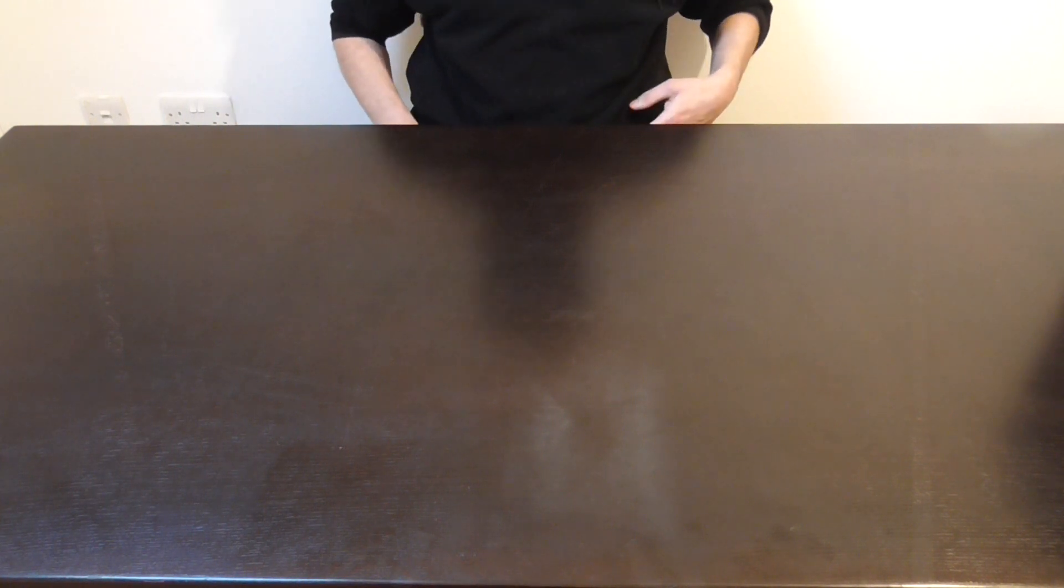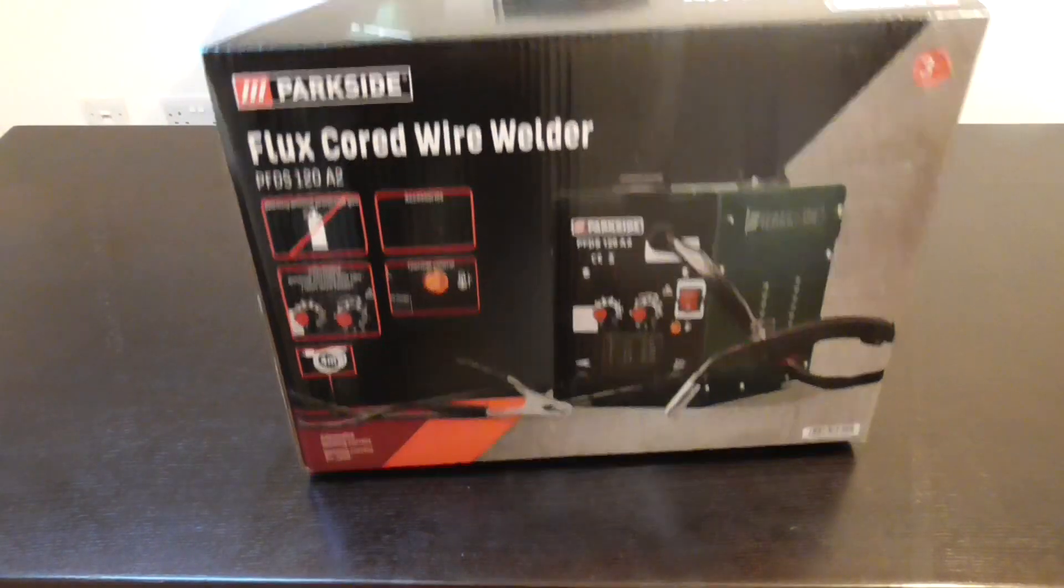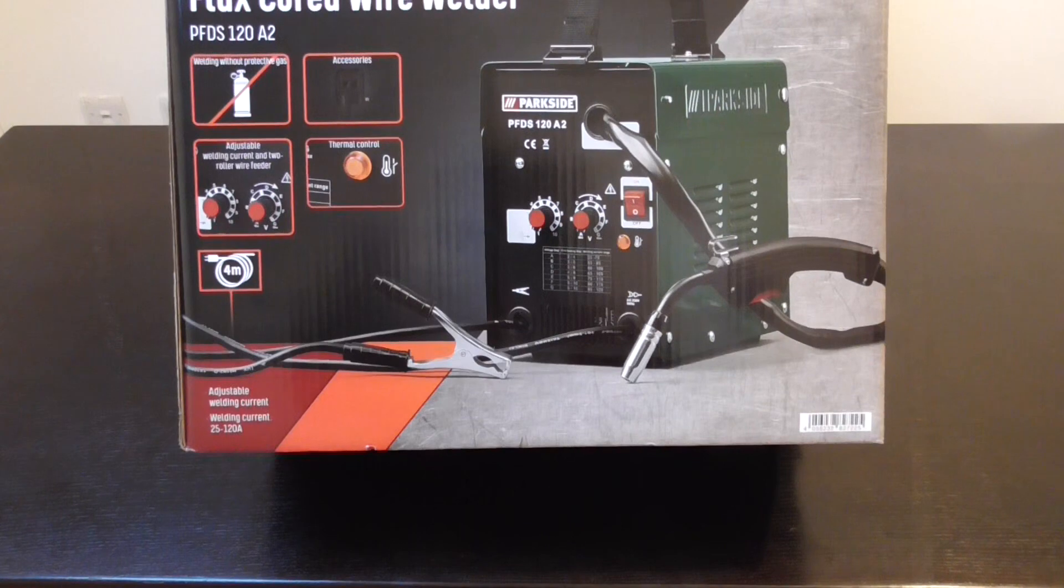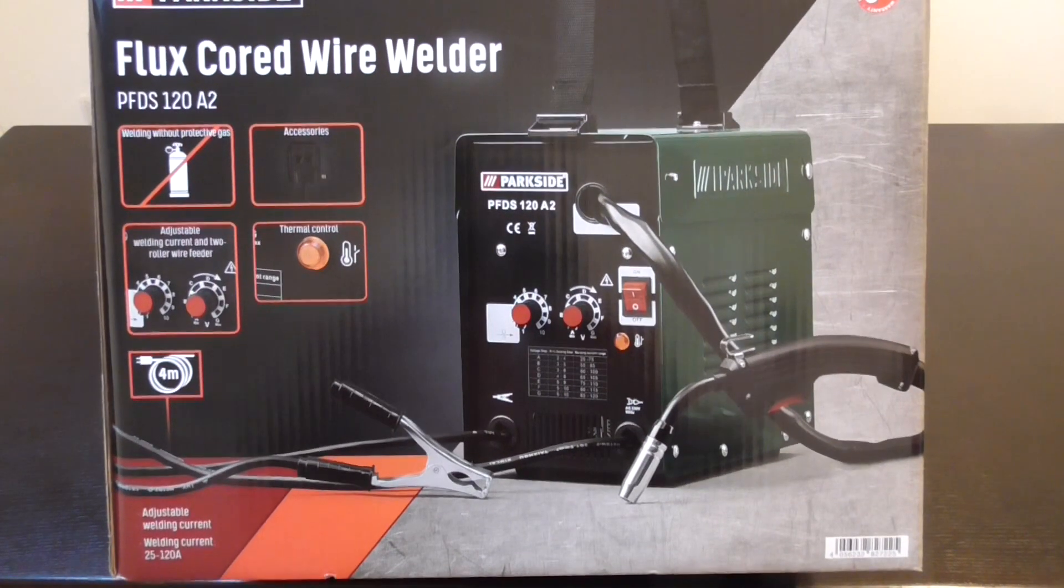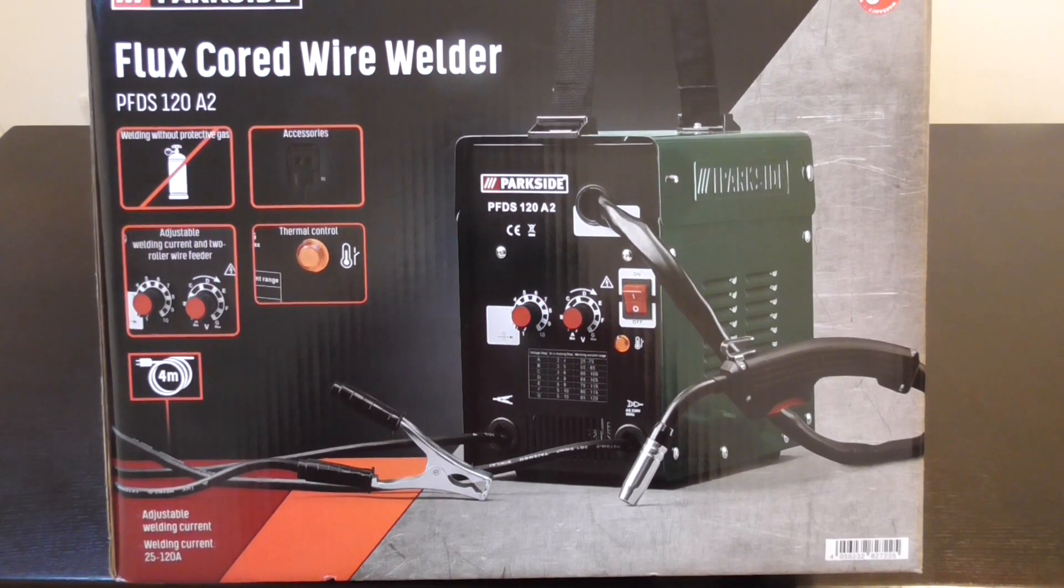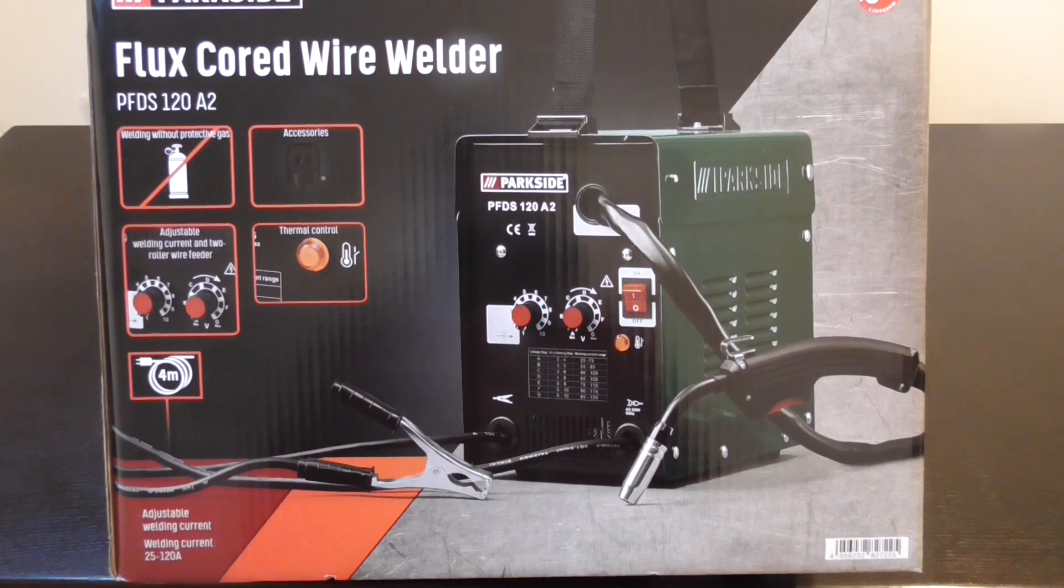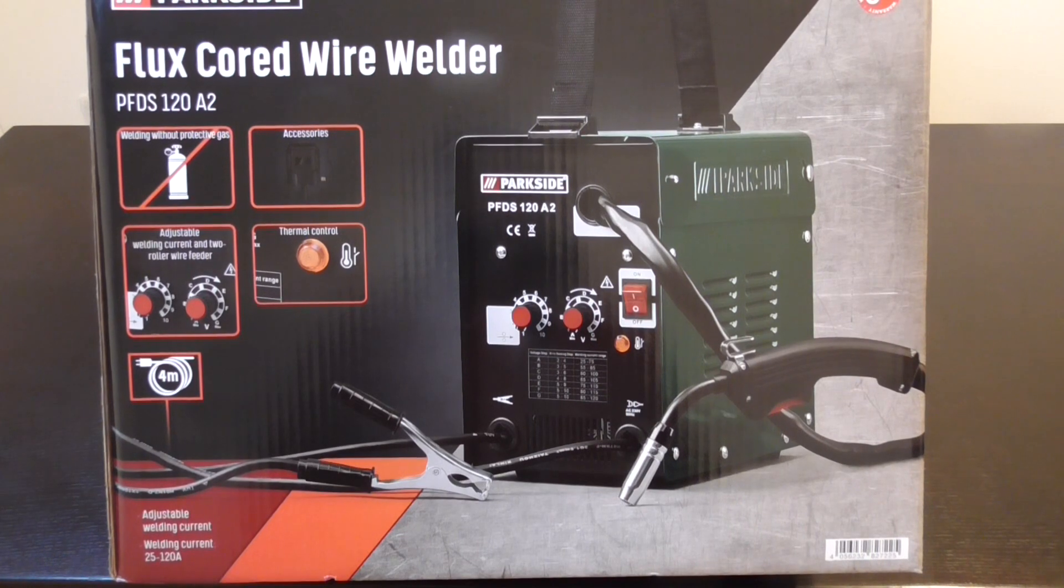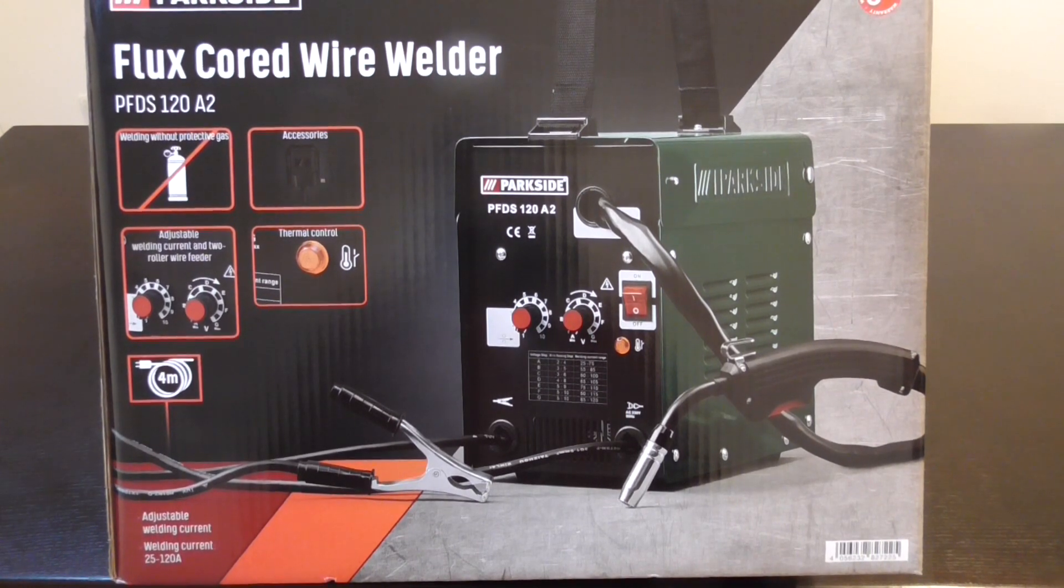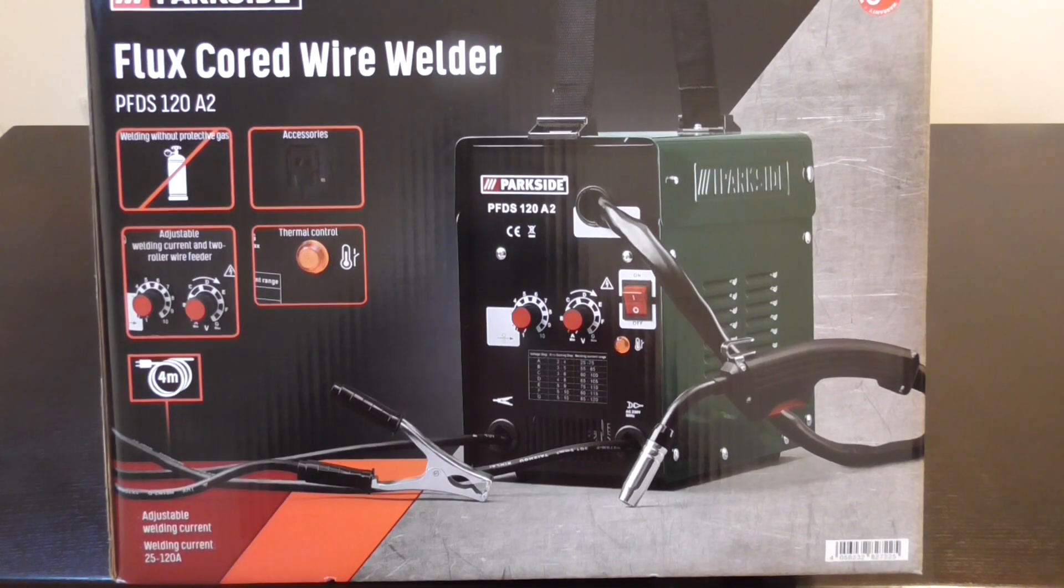Hello and welcome to Magpie Maker once again. I went to Lidl today to buy a bag of potatoes, but when I got there I bought this instead. It's a welder. It's a flux cored wire welder, product number PFDS120A2, and I'm going to do an unboxing of this today.